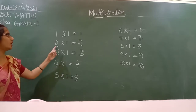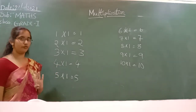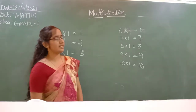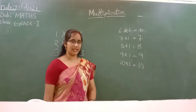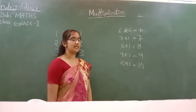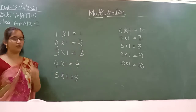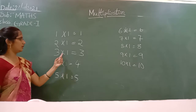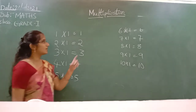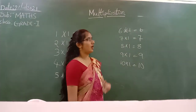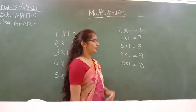Again, read along with me. 1 times 1 equal to 1. 2 times 1 equal to 2. 3 times 1 equal to 3. 4 times 1 equal to 4. 5 times 1 equal to 5. 6 times 1 equal to 6. 7 times 1 equal to 7. 8 times 1 equal to 8. 9 times 1 equal to 9. 10 times 1 equal to 10.